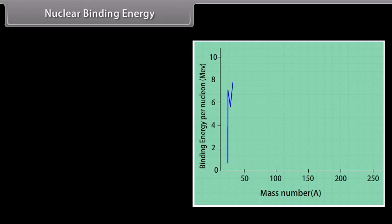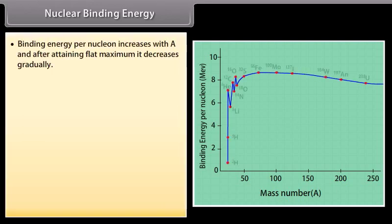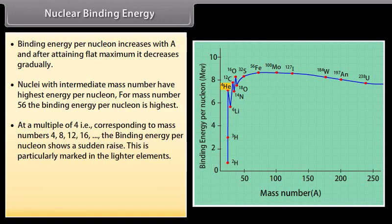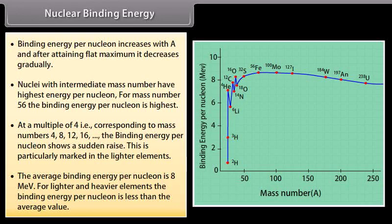From the graph we note that binding energy per nucleon increases with A and after retaining flat maximum, it decreases gradually. Nuclei with intermediate mass number have highest energy per nucleon. For mass number 56, the binding energy per nucleon is highest. At multiples of 4, that is corresponding to mass numbers 4, 8, 12, and 16, the binding energy per nucleon shows a sudden raise. This is particularly marked in the lighter elements. The average binding energy per nucleon is 8 MeV. For lighter and heavier elements, the binding energy per nucleon is less than the average value.